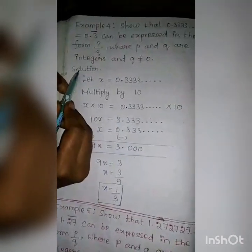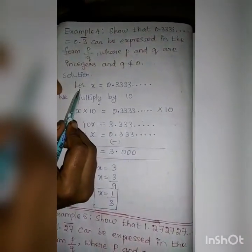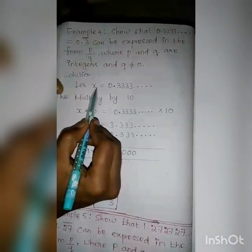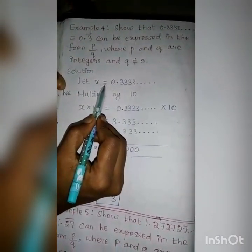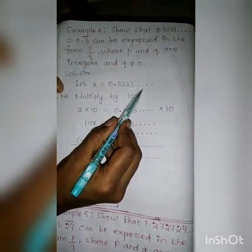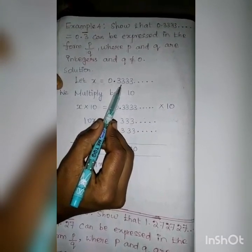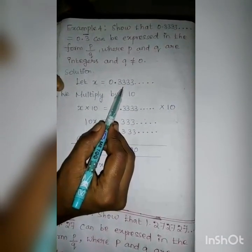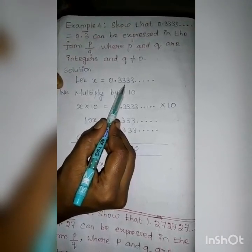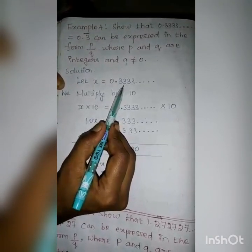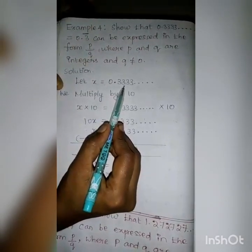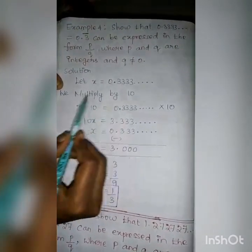Solution. Let us choose X as the given value. So, X equal to 0.3333 etc. Here, how many numbers are repeated? Only one number is repeated — that is, 3 is repeated again and again. If only one number is repeated, we have to multiply the LHS and RHS by 10.